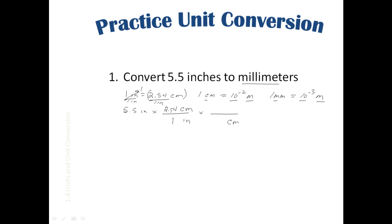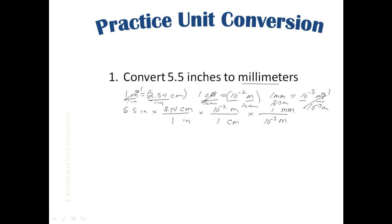Next, we want to get rid of the centimeters and get back to the base unit, meters. We divide both sides of the equality by one centimeter; this side becomes one, giving us the true conversion factor: 10 to the negative 2 meters over one centimeter. Then we need to get rid of the meters and end up with millimeters, so we divide both sides by 10 to the negative 3 meters to get meters in the denominator and millimeters in the numerator.